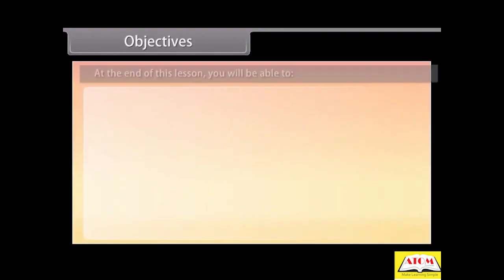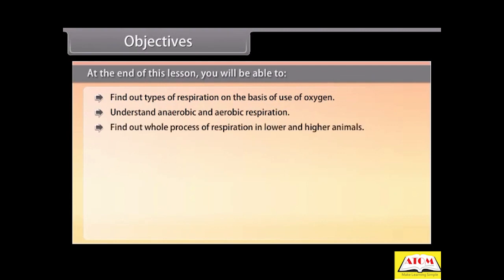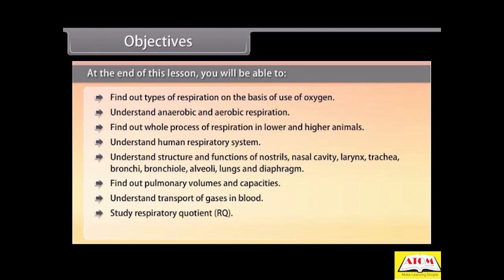Objectives. At the end of this lesson, you will be able to find out types of respiration on the basis of use of oxygen, understand anaerobic and aerobic respiration, find out the whole process of respiration in lower and higher animals, understand human respiratory system, understand structure and functions of nostrils, nasal cavity, larynx, trachea, bronchi, bronchioles, alveoli, lungs, and diaphragm, find out pulmonary volumes and capacities, understand transport of gases in blood, study respiratory quotient, and understand ill effects of smoking.